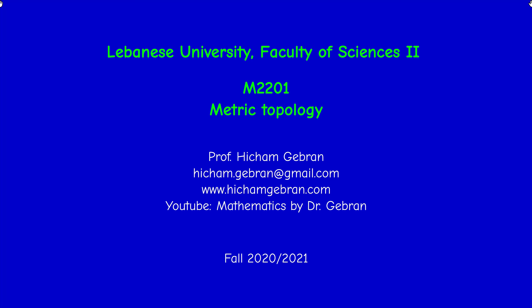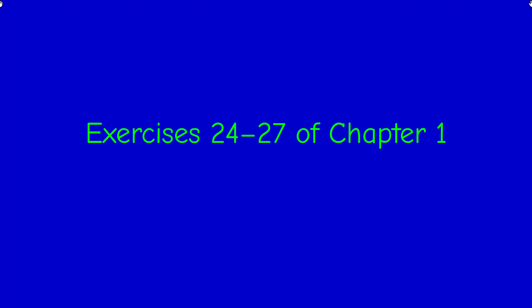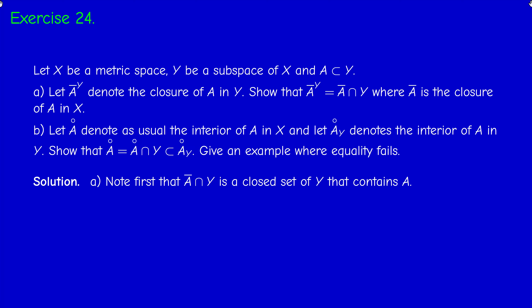Welcome back. In this video, I'm going to solve exercises 24 to 27 of chapter 1. Exercise 24 is an exercise on the subspace topology. We have a metric space X and a subset or subspace Y of X. When I say subspace, it means that Y inherits the distance from X, so it is itself a metric space.